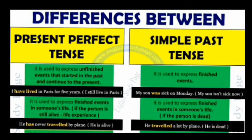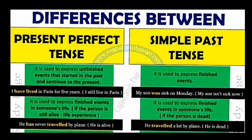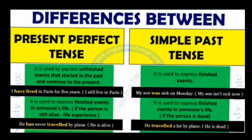जैसे कि example लेते हैं: 'I have lived in Paris for five years' — यहाँ पर 'have' लगाया, तो यह sentence Present Perfect tense का है, यानि कि मैं Paris में पाँच साल से रह रहा हूँ, still he is living in Paris. लेकिन 'My son was sick on Monday' — मेरा बेटा Monday को बीमार था, लेकिन अभी वो ठीक हो चुका है। तो जैसे ही 'था' आता है, हम लोग Simple Past का use करेंगे, और 'अभी तक रह रहा हूँ' के लिए Present Perfect tense का use करेंगे।